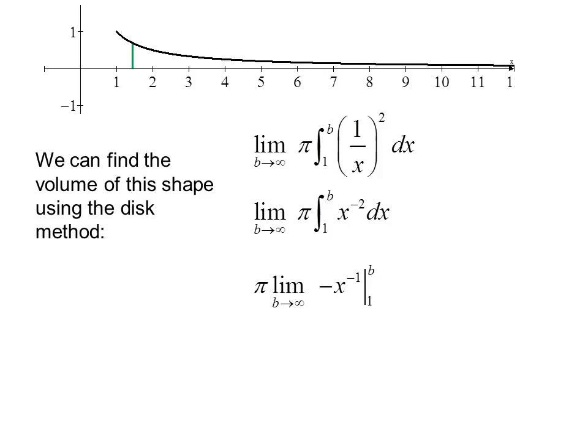We can factor out the constant pi and evaluate the antiderivative. Now we have pi times the limit as b goes to infinity of negative x to the negative 1 evaluated from 1 to b. Plugging in our limits of integration, we get pi times the quantity limit as b goes to infinity of negative 1 over b minus negative 1 over 1. As b goes to infinity, our first term approaches 0, and so our volume is pi.